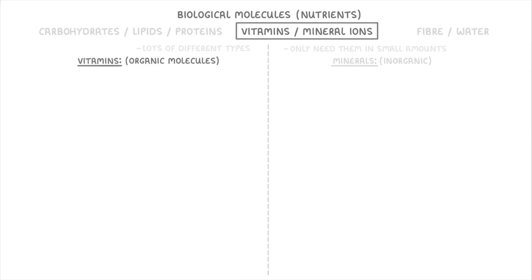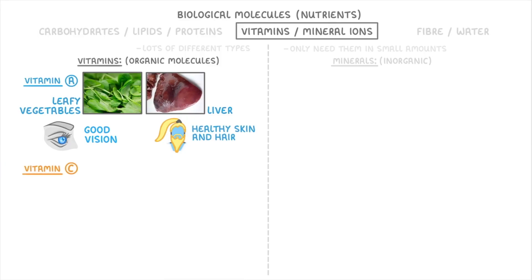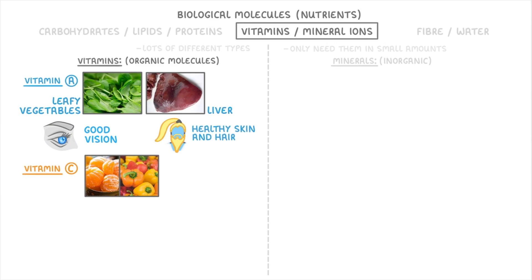If we start with vitamins, vitamin A can be gained from foods like liver or leafy vegetables, and you need it for good vision and to keep your skin and hair healthy. Then there's vitamin C, which you can get from fruit and vegetables, particularly citrus fruits like oranges, and you need this to prevent yourself from getting the disease scurvy.